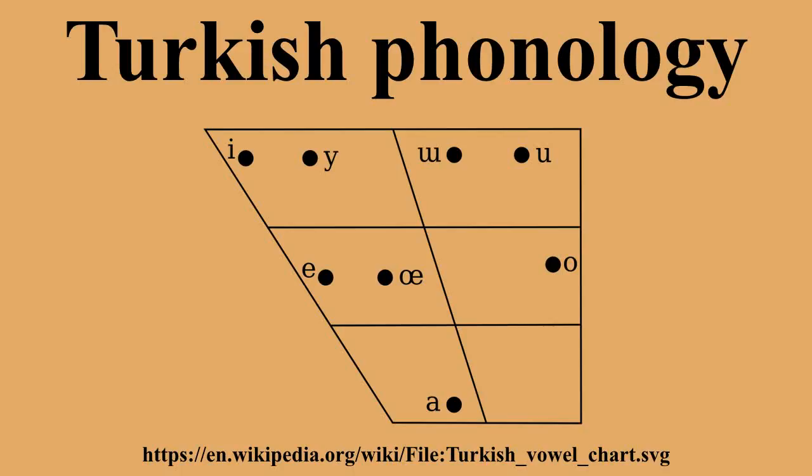Phonotactics. Turkish phonotactics are very simple and can be described as CV. Although Turkish words can take two final consonants, the possibilities are limited. Turkish only allows complex onsets in a few recent English, French, and Italian loanwords, such as França, Plan, Programme, Propaganda, Strategy, Stress, Sterile, and Trend. Even in these words, the complex onsets are only pronounced as such in very careful speech.